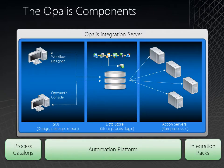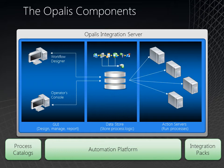Let's take a look at the Opalis components at a high level. In the middle, we have a data store which stores all the configuration, workflows, and logic. On the left, we have two UIs — the workflow designer and the operator console. Both can execute workflows, but only the workflow designer can add, edit, and create. On the right, we see a series of action servers, which actually run the processes — taking that workflow and executing all the steps within it. You need as many as you need; they scale out horizontally, agentlessly performing actions: authenticating, performing the action, closing the connection, and moving on.